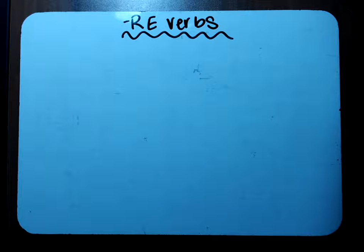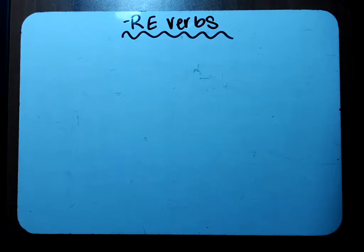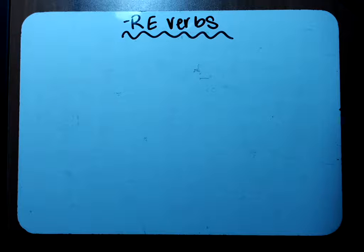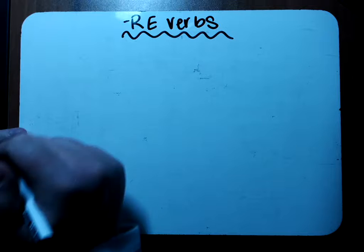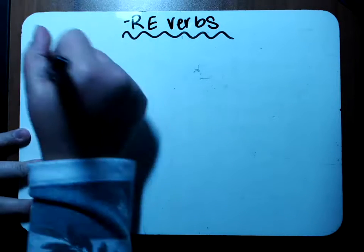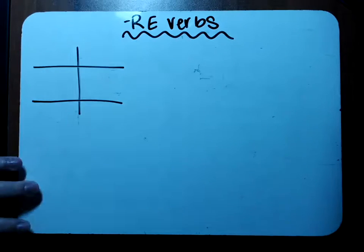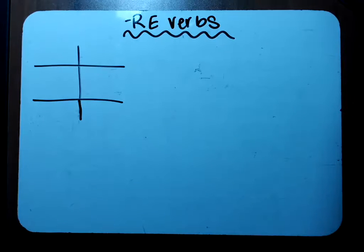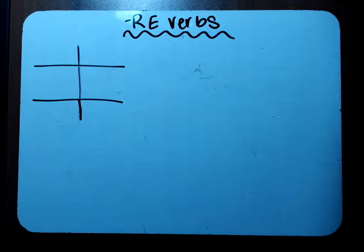So let's get started. The first thing we need to do is draw our table — you guys are quite familiar with this table now. The first step to conjugating our verb is to take off the ending and add on new endings. For RE verbs: the je form takes just S, the tu form takes S, and for the il/elle form — nothing. You take off the RE but you don't add anything.